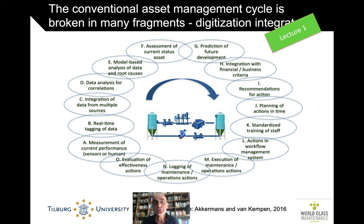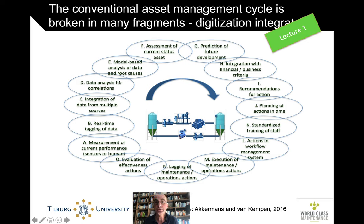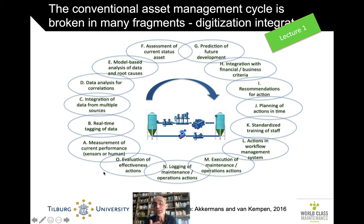We also saw in the first lecture that the smart asset management cycle, at least for half of it, is comprised of what we call condition-based maintenance. Everything from step A to step I is condition-based maintenance: you measure the data, collect them, integrate, and do the analysis — from analysis and assessment and prediction integrated with other areas. That's definitely CBM. The rest of the cycle is implementing the decisions you made based on condition-based maintenance.